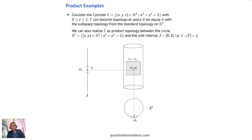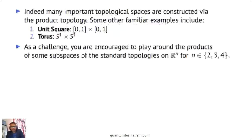Both the circle and the unit interval are topological spaces, right? Inherited from the standard topology of the respective ambient spaces — the circle inherits the topology from R2, whereas the unit interval inherits the topology from R. Many important topological spaces are constructed via the product: you identify two interesting topological spaces, take their product, and generate another topological space.